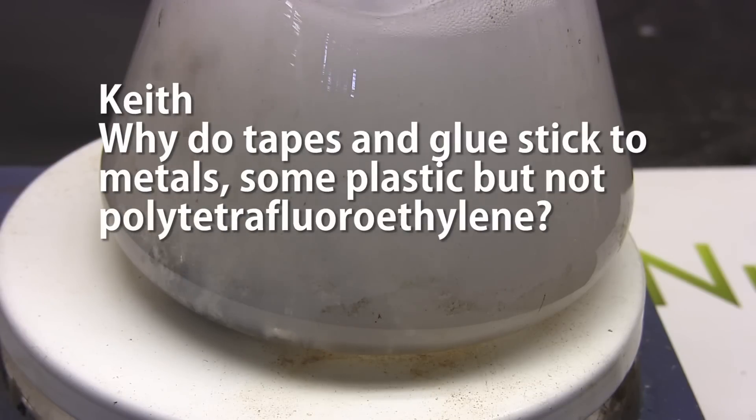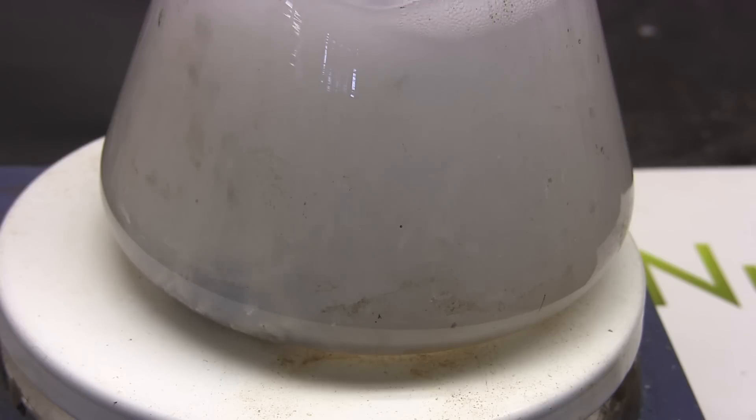Keith asks why do tapes and glue stick to metals, some plastics, but not polytetrafluoroethylene? There are many different mechanisms by which adhesives work. Some stick using van der Waals forces, others interlock with the surface, some actually dissolve the surface slightly and then re-solidify, others chemically react with the surface and bond to it that way. And there are even more mechanisms that I won't get into but most general adhesives use multiple mechanisms to bond to a surface. The thing about polytetrafluoroethylene, also known as Teflon or PTFE, is that very few of those mechanisms actually work. It dissolves in almost nothing, it's very smooth and non-porous so interlocking with it is hard, it is chemically inert so reactions don't work on it and so on. Therefore very few things will stick to such a surface.